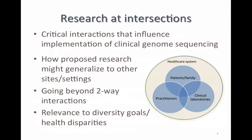A second high-level aim of CSER II is research at the intersection of several domains. Our experience in CSER I suggests there are critical interactions among these different domains that influence implementation of clinical genomic sequencing. Applicants will describe how their proposed research addresses questions related to these domains and how findings might generalize to other sites or settings. Going beyond two-way interactions — such as between patients and practitioners — will be critical, as will the tie-in of these domains to diversity goals and health disparities.